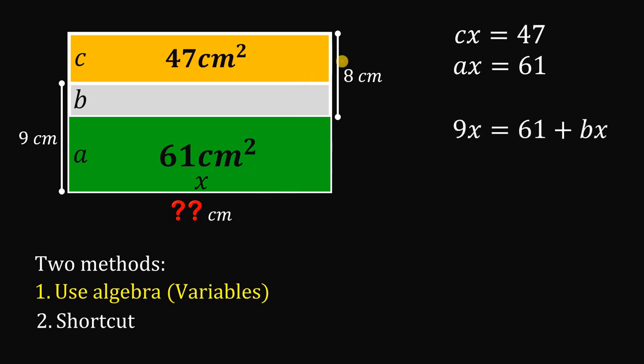Now, let's use another given. How about this 8 multiplied by x. 8 times x, this will give us two regions again. We have bx and we have cx. So, we have 8x equals cx plus bx. Now, we have a value for cx. This is equivalent to 47. So, we can replace this with 47.